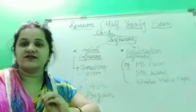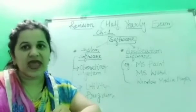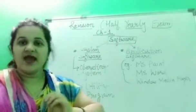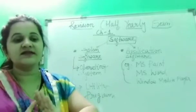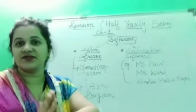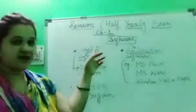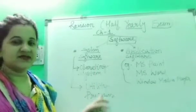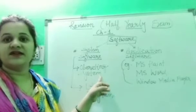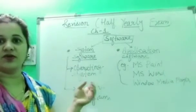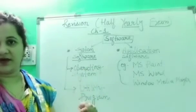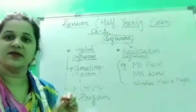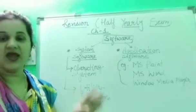Application software refers to software specially designed to perform a particular task. System software is also of two types: operating system and utility programs. Operating systems manage and control the working of hardware and software. A software makes the hardware work — without any software, a hardware is simply an empty device and will not work.